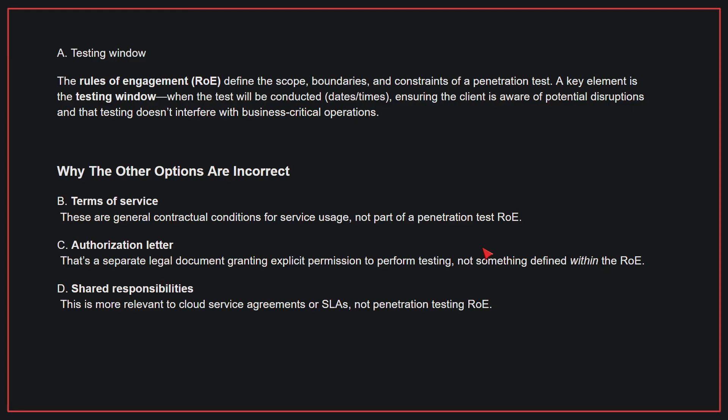Why the other options are incorrect: B, terms of service — these are general contractual conditions for service usage, not part of a penetration test ROE. C, authorization letter — that is a separate legal document granting explicit permission to perform testing, not something defined within the ROE. D, shared responsibilities — this is more relevant to cloud service agreements or SLAs, not penetration testing ROE. Therefore, the correct answer is A.